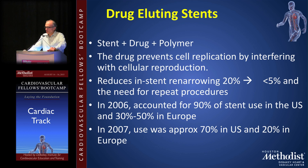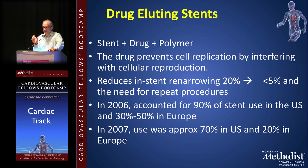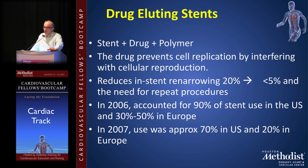The drug prevents cell replication by interfering with the cell cycle and cellular reproduction, reducing in-stent re-narrowing almost from the get-go — actually absolutely from the get-go. The first randomized trial had a re-stenosis rate of zero percent. Relatively small study, but a very clear result — physicists call zero a singularity for a reason. It gets your attention, and it got the world's attention. In virtually every study, the rate of in-stent re-stenosis is now reduced from 20 percent to less than five percent.